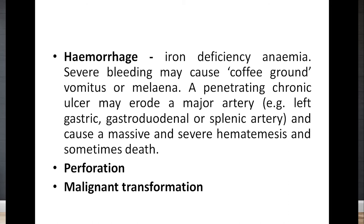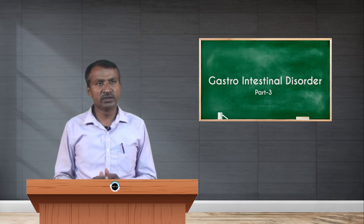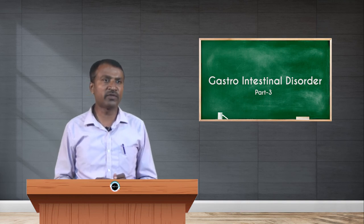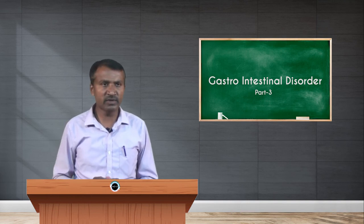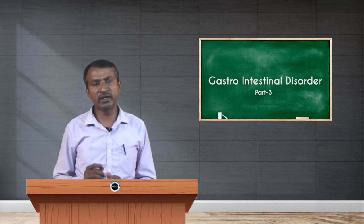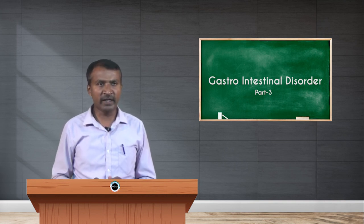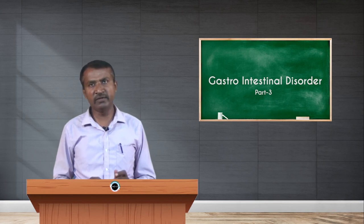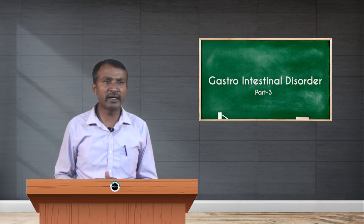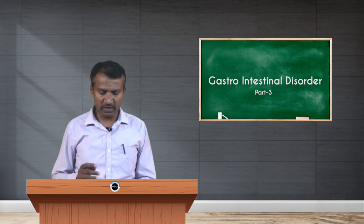A penetrating chronic ulcer may erode a major artery — such as the left gastric, gastroduodenal, or splenic artery — causing massive and severe hematemesis and sometimes death. Hematemesis is vomiting of blood where the vomitus looks like coffee grounds. Other complications include perforation, where stomach contents may enter the peritoneal cavity and cause peritonitis, and malignant transformation, which may lead to cancer.